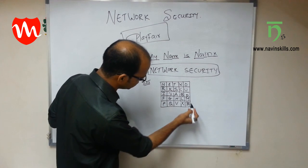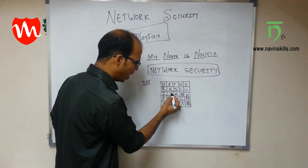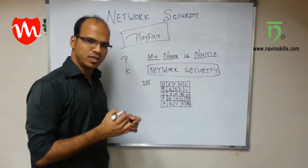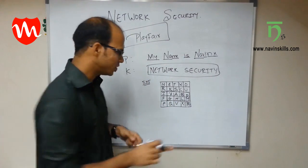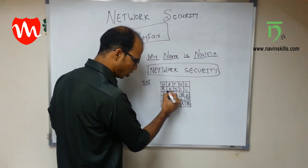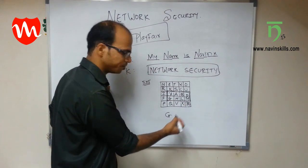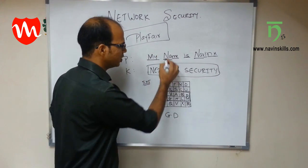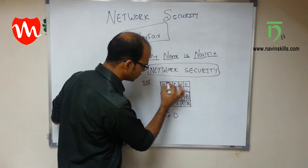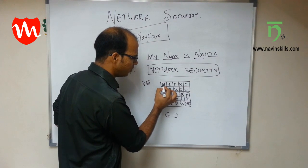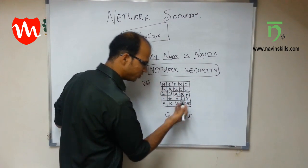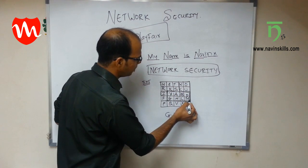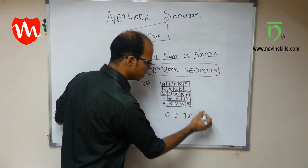Now search for each pair in the matrix and create a virtual box. For M and Y: M is here and Y is here — form a box and take the diagonally opposite characters. Diagonal opposite of M is G and of Y is D, so MY becomes GD. For N and A: N is here and A is here — form a box. For N the diagonal gives T and for A it gives I. For M and E: M gives G and E gives O.